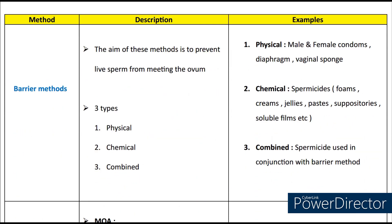To begin with barrier methods, the aim is to prevent the live sperm from meeting the ovum. There are three types: physical, chemical and combined. For physical barrier methods, we use female and male condoms, diaphragm and vaginal sponge. Chemical barriers include spermicides, which are in the form of foams, creams, jellies, etc. The combined barrier method includes a spermicide used in conjunction with a physical barrier method.